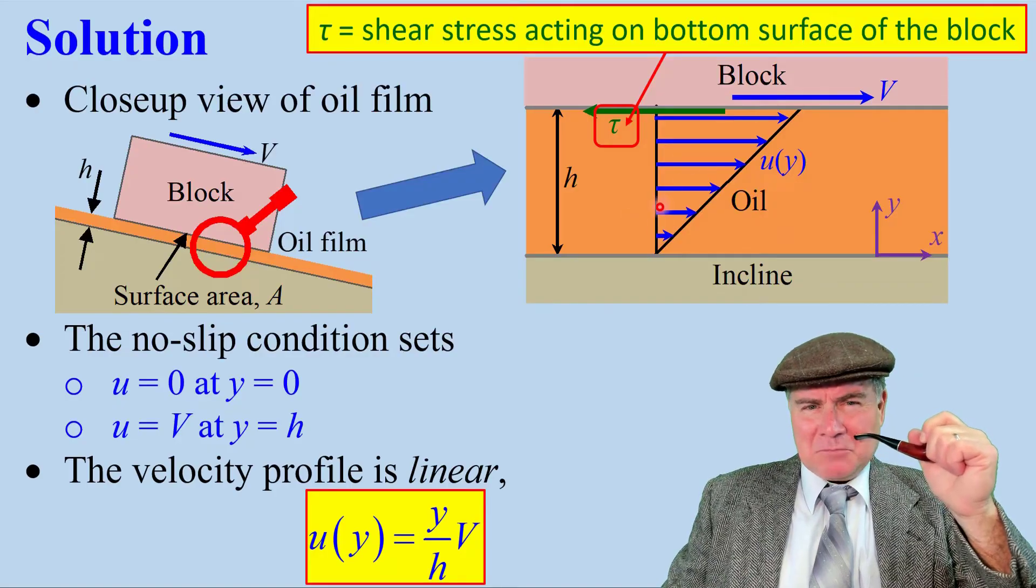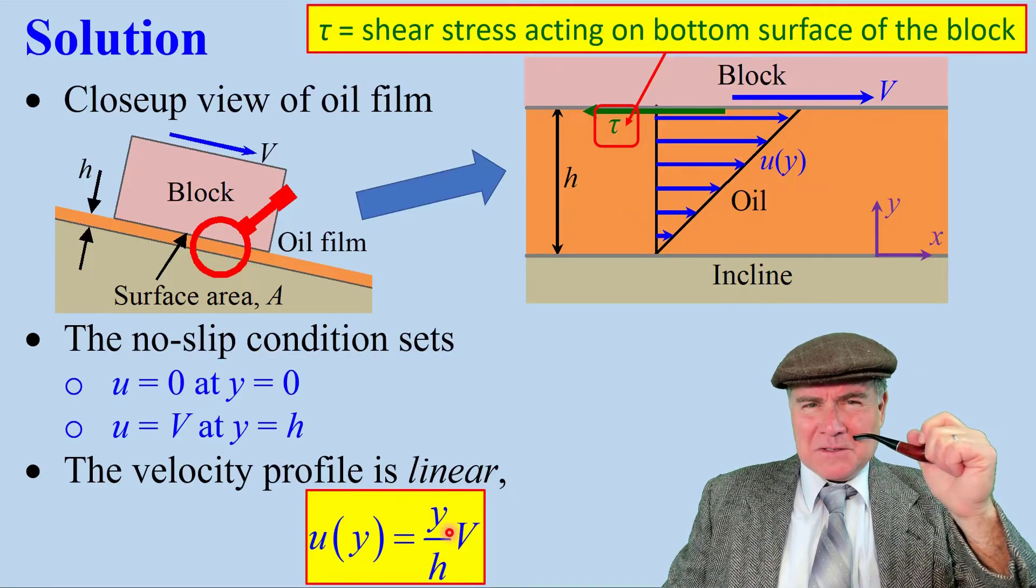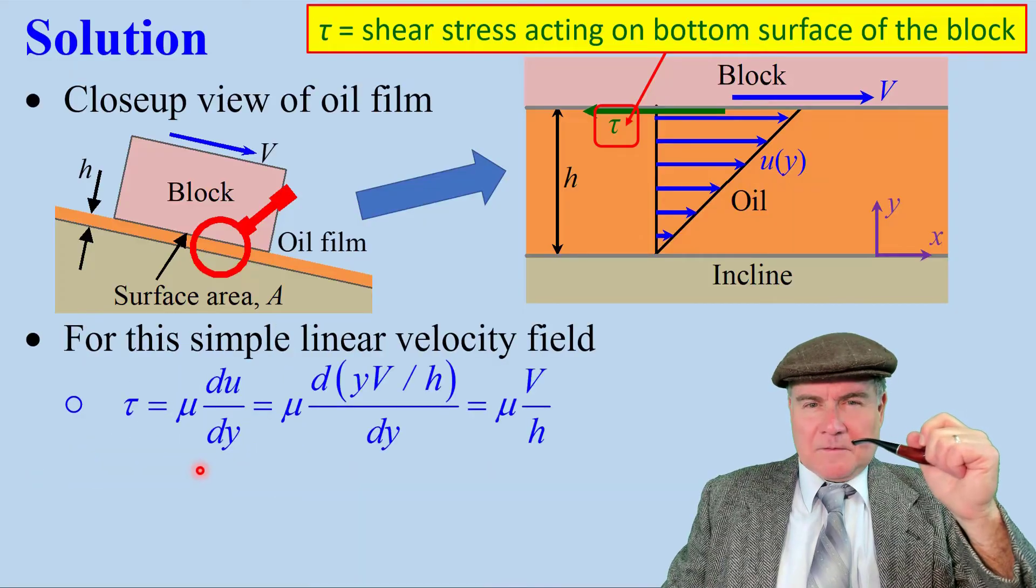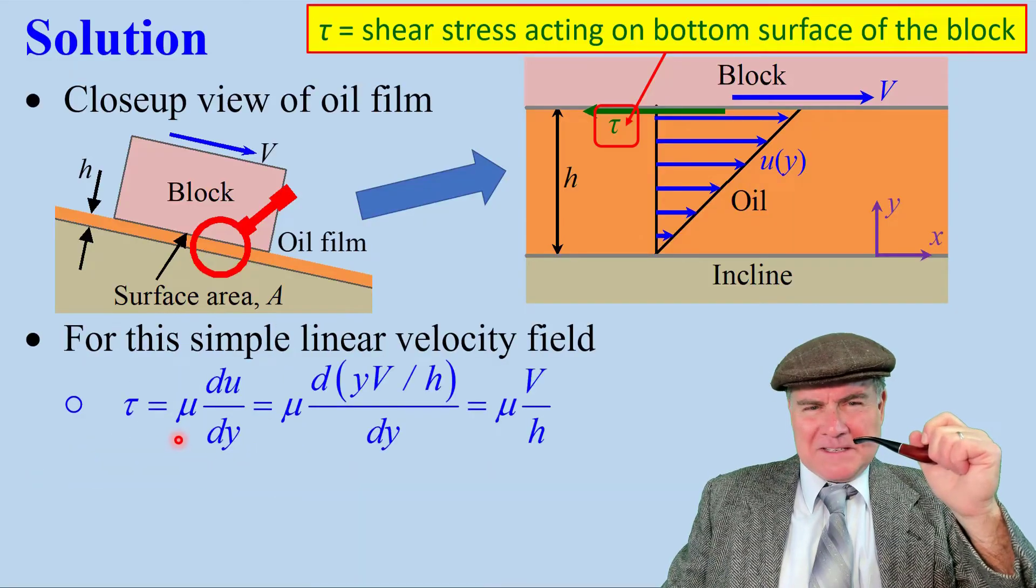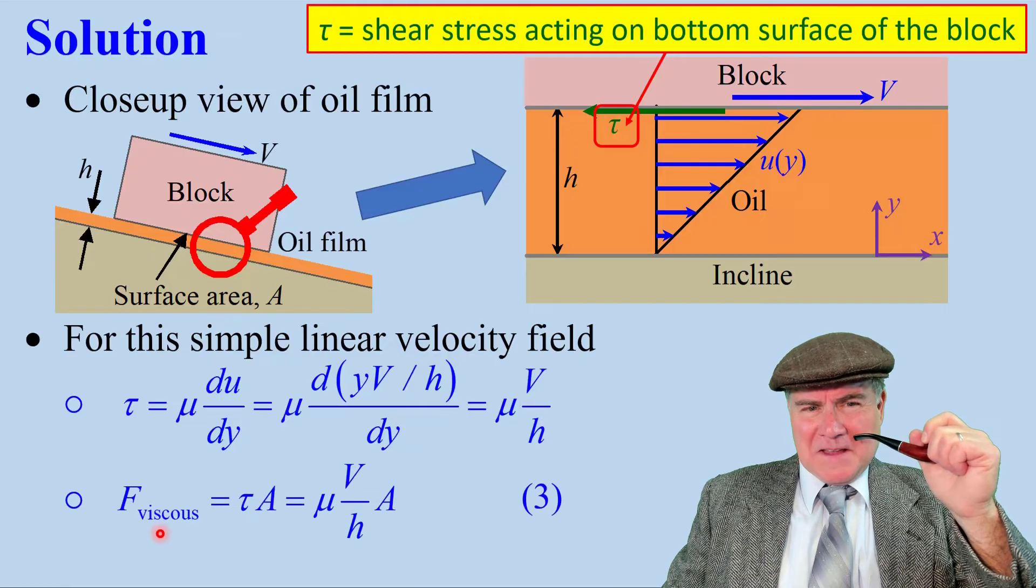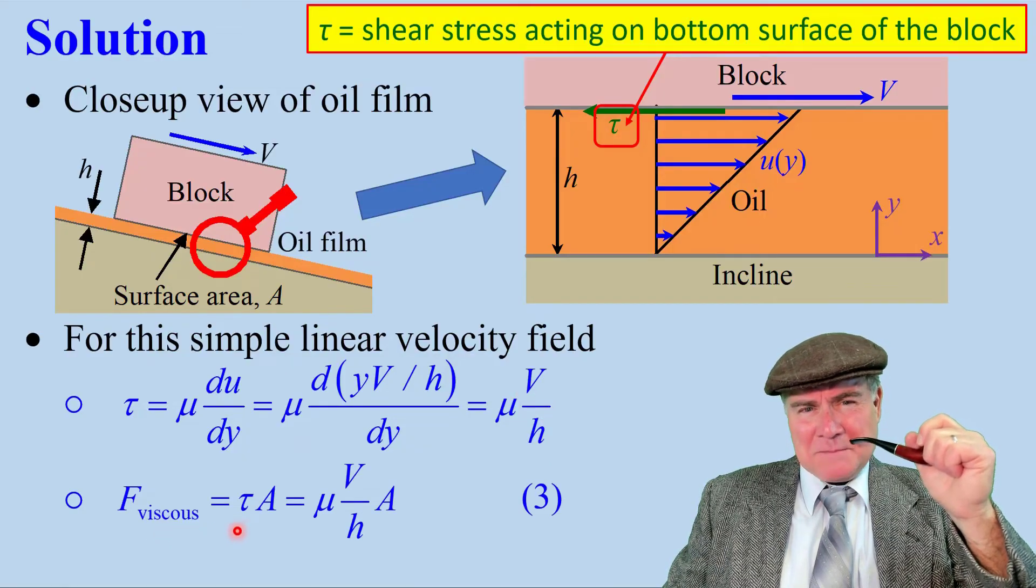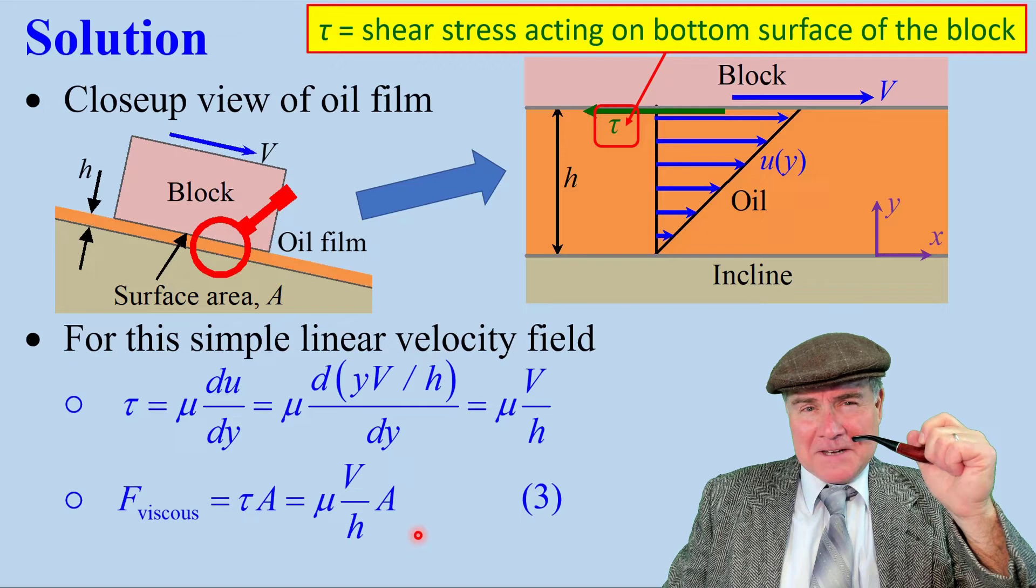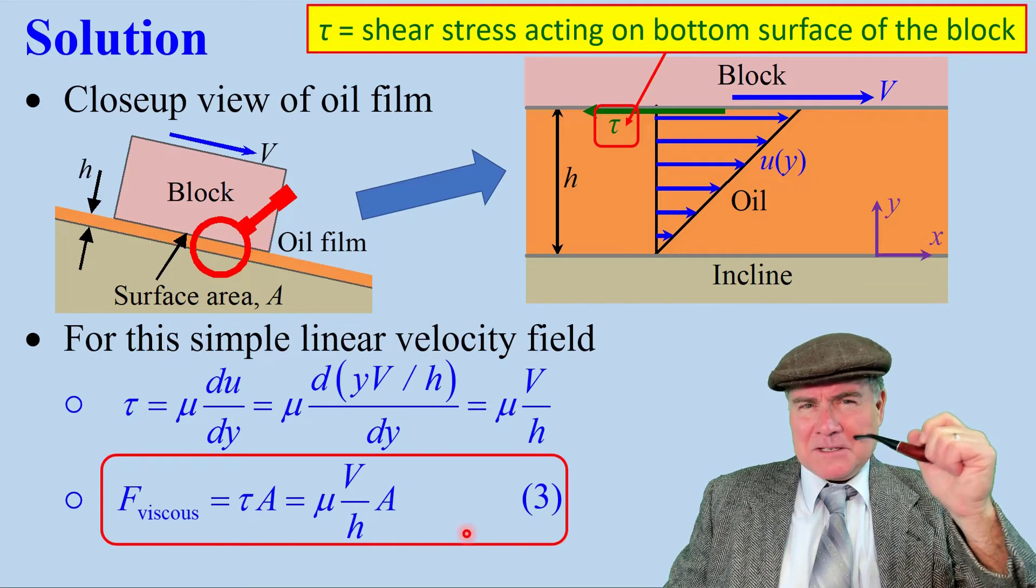So U is Y over H times V. For this simple linear velocity field, tau is mu dU/dY, which simplifies to mu V over H. And the viscous force is just tau times A, or mu V over H times A. We call this equation 3.